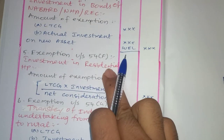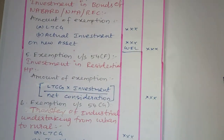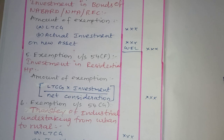Next, Exemption Under Section 54F. It is simple: if we have a house property transferred to a house property, that is Section 54. Under Section 54F, if we have any long term capital asset (other than a residential house property) and we transfer and sell it, and then invest the proceeds in a residential house property, we can claim this exemption.